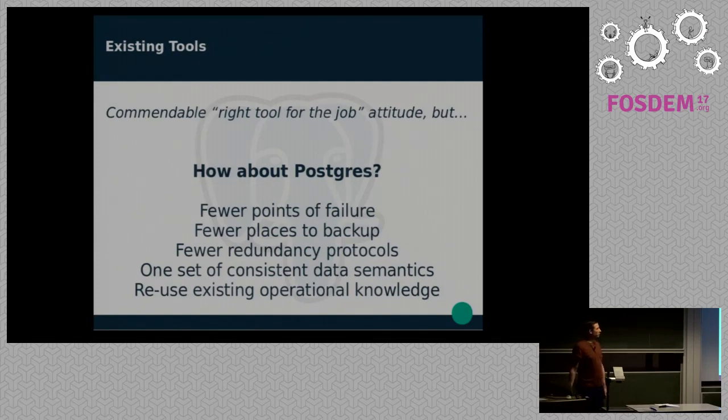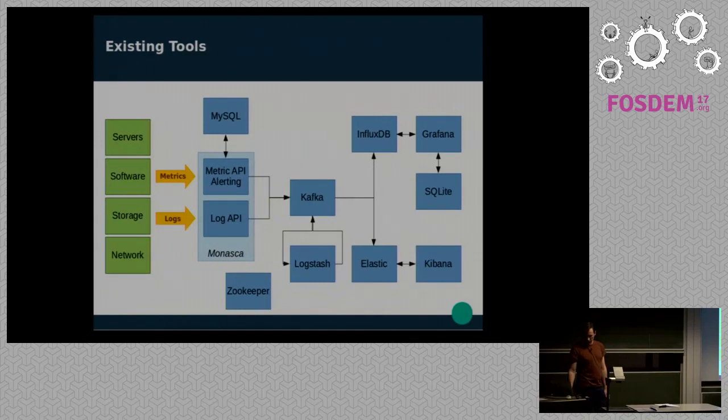And so it's a commendable right tool for the job attitude. But why not Postgres? Postgres can store data. So if we just used Postgres, we'd have fewer points of failure, fewer places to back up, fewer redundancy protocols, a more consistent set of data semantics. And you can reuse your existing knowledge of Postgres as well. So this seems like a good idea. So if we look at these components again, well, as it turns out, the Monasca team have already ported this to Postgres. So you can already use Postgres as a backend for this. As with a lot of OpenStack, you can use Postgres with it. And Grafana actually also supports Postgres, which is nice, and MySQL, but we don't care about that.